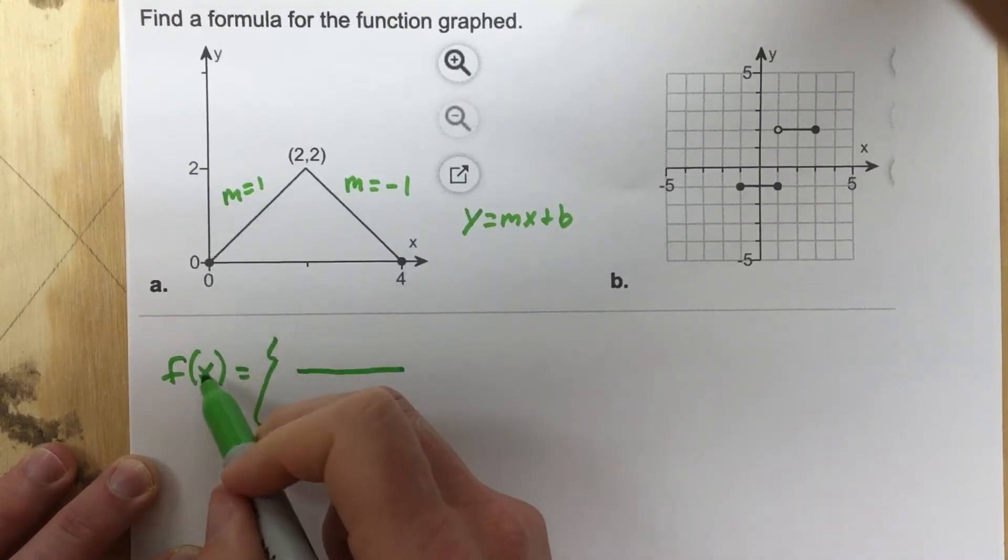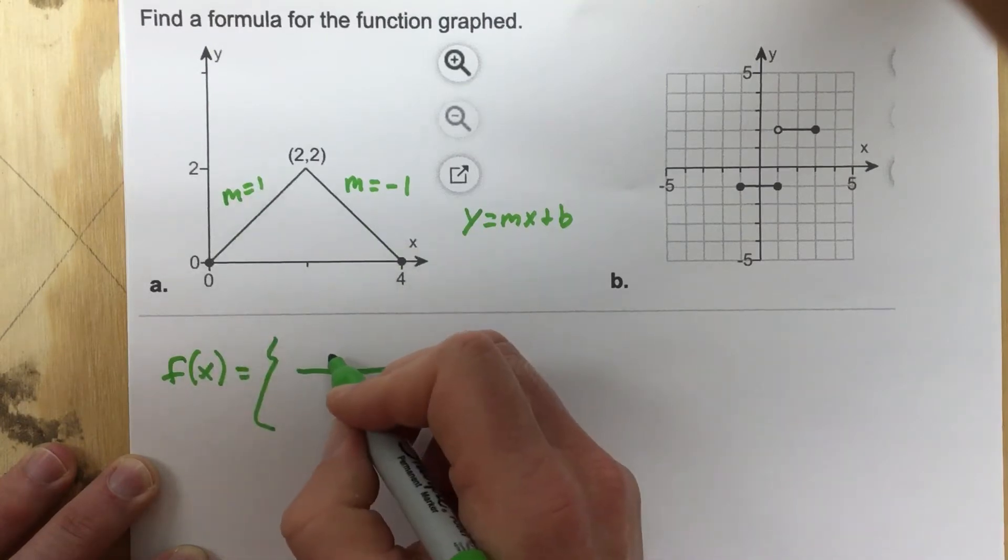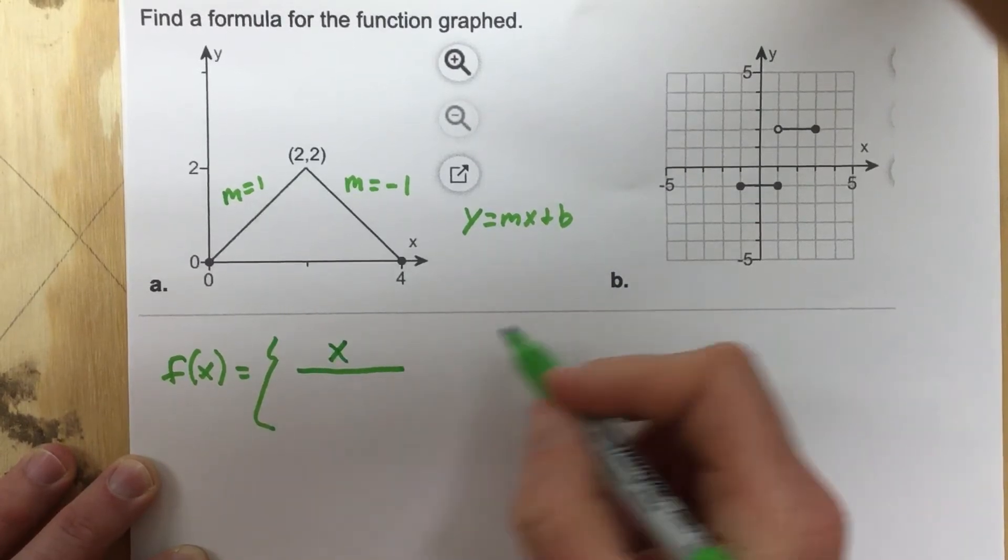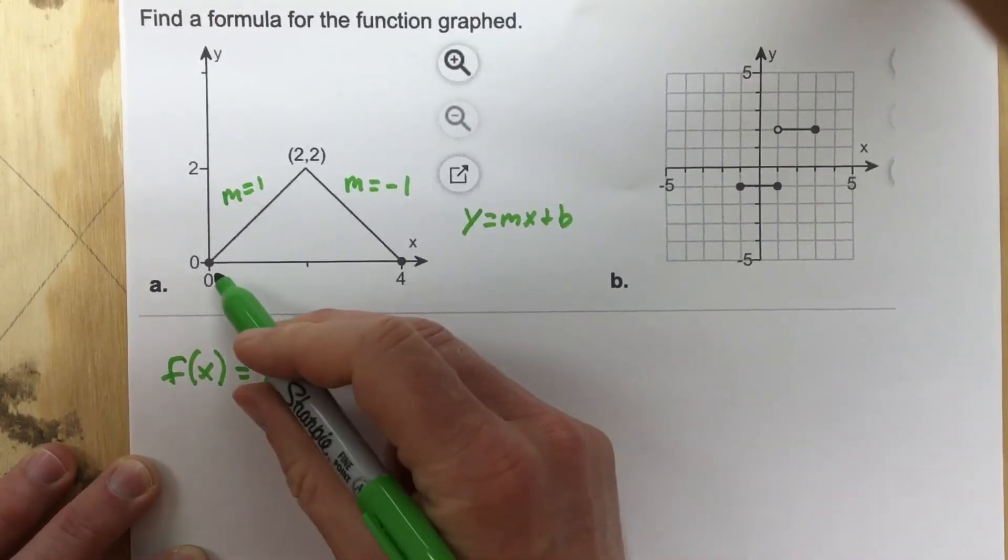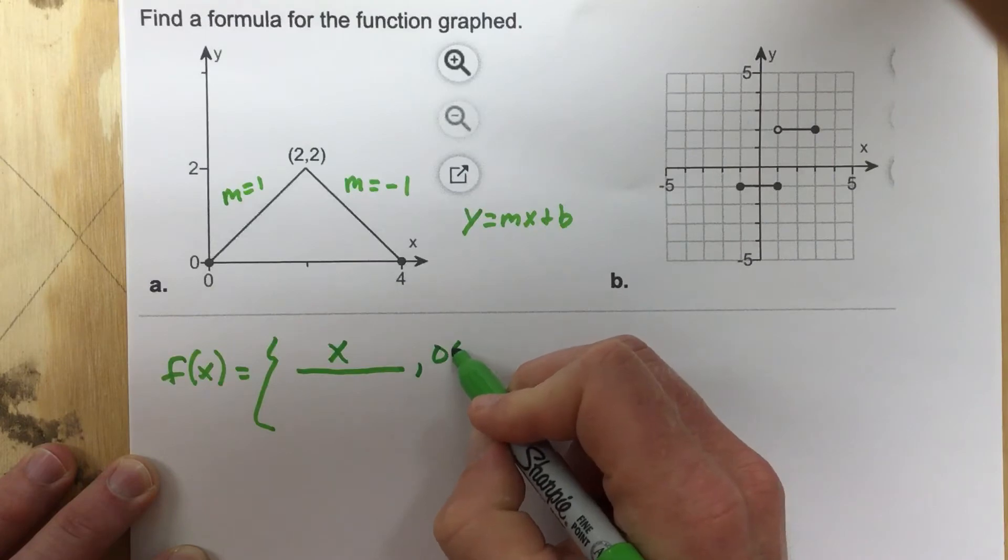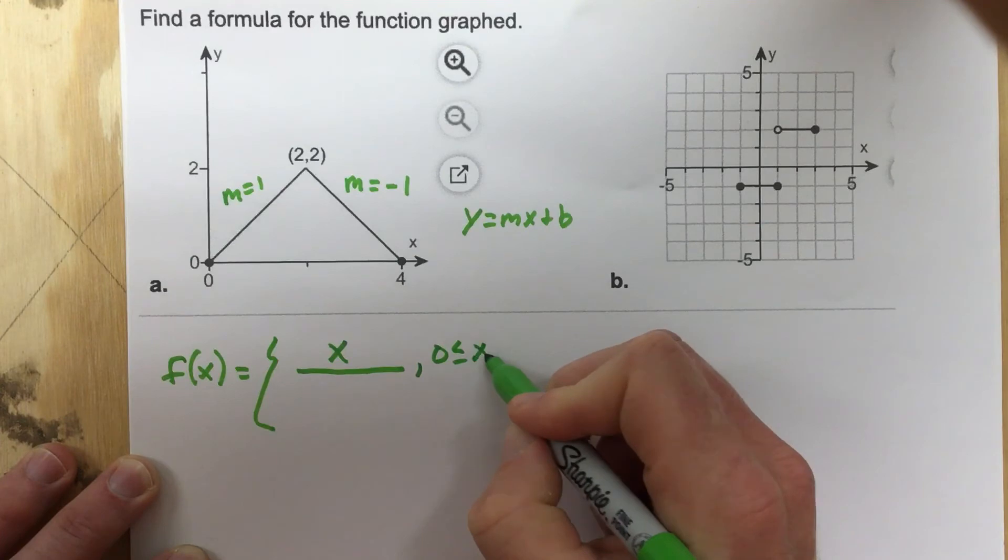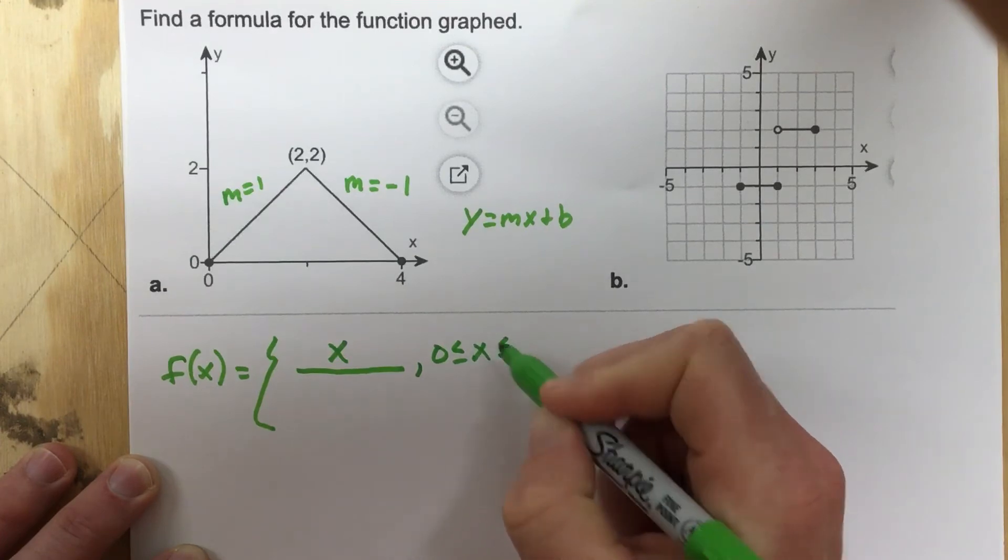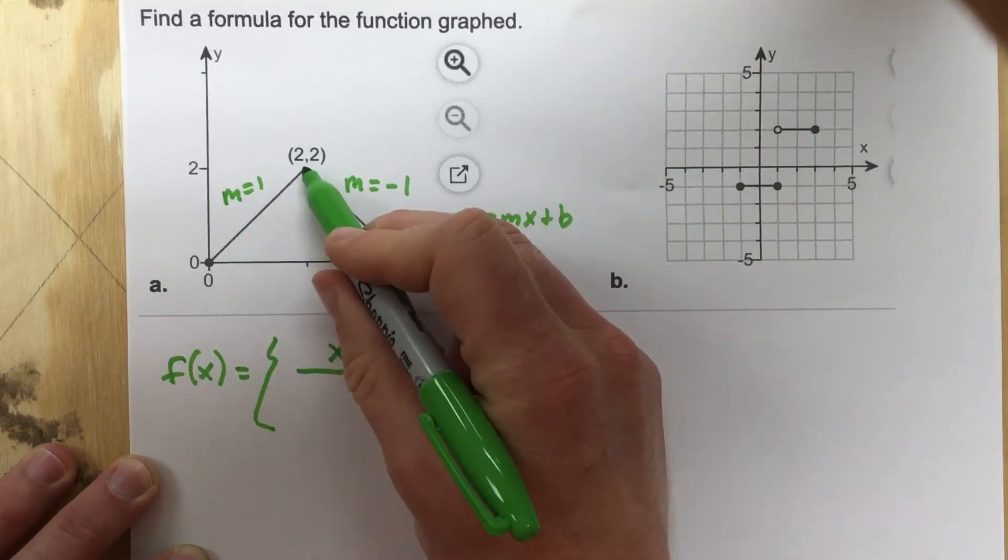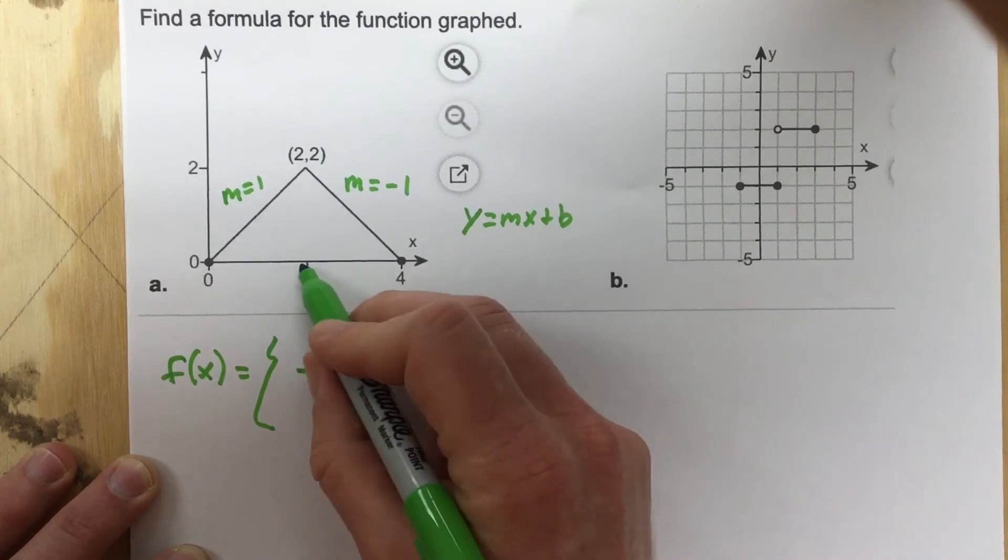because it says f of x here, I don't have to say any y equals or anything like that. So I can just say 1x, or just x, and that's going to be from 0, less than or equal to, and I say less than or equal to because it's a closed dot there, x less than or equal to, and then this would be 2 for the x value there.